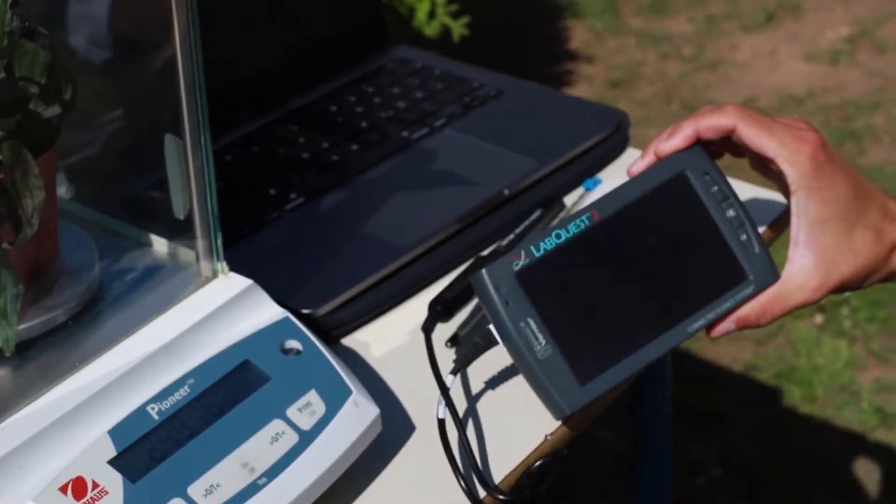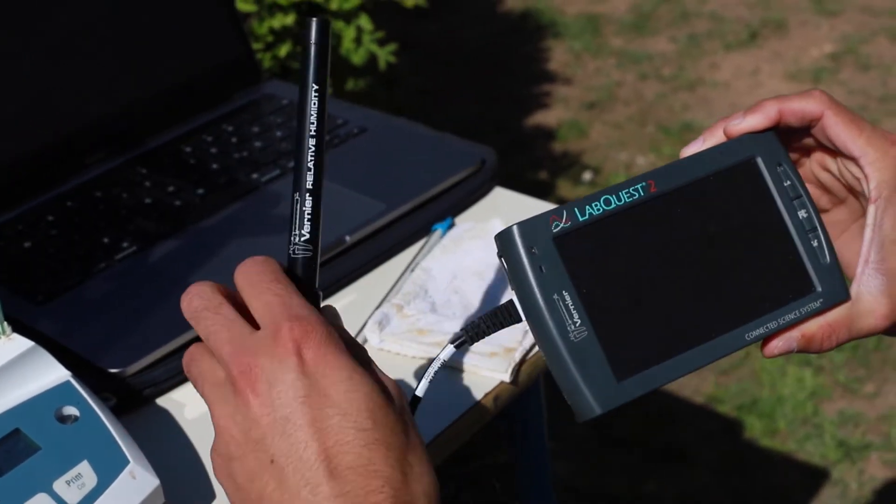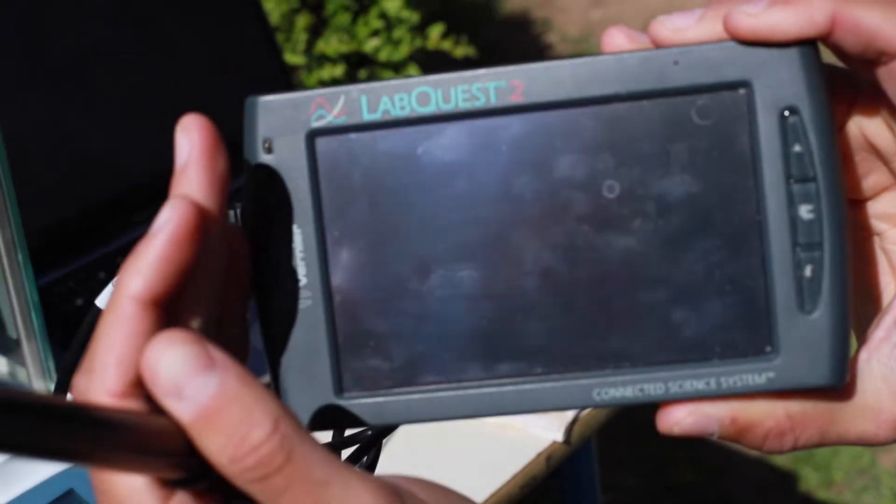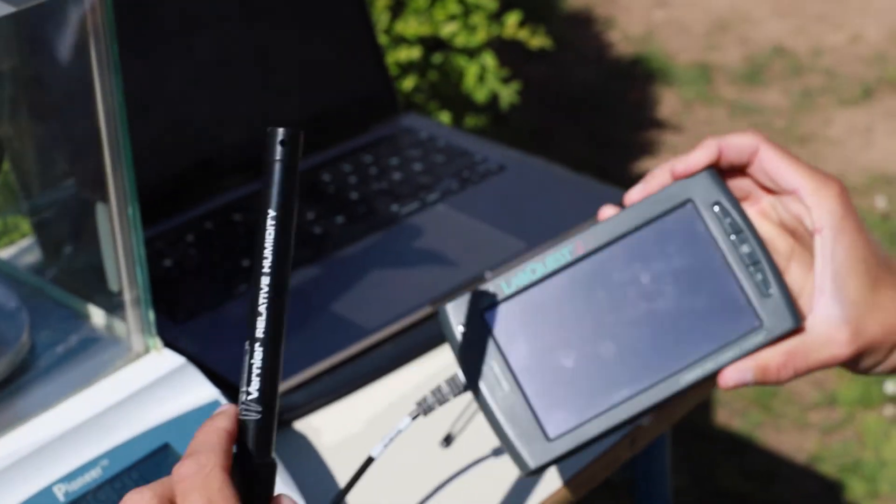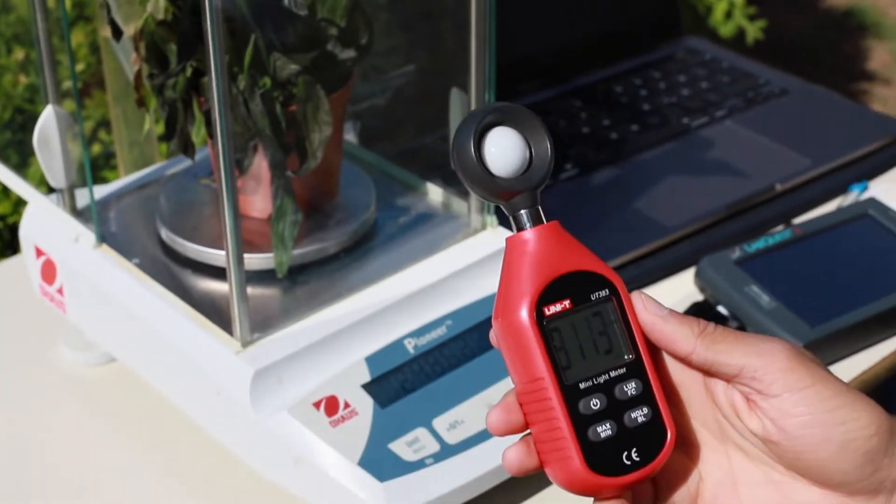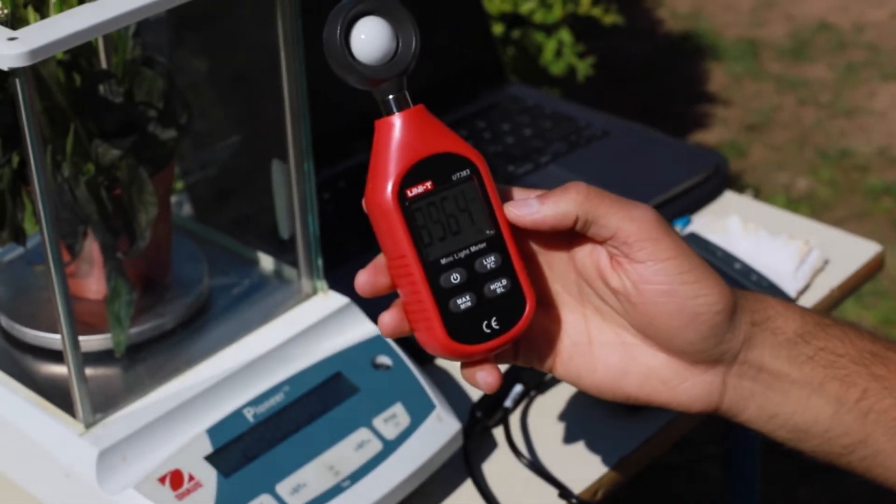This is a humidity meter to measure the humidity. I put it in there and then it shows me the humidity of the plant. And then this is a light meter, which shows me the light intensity.